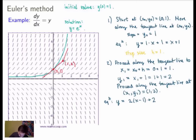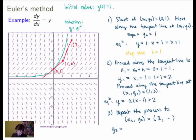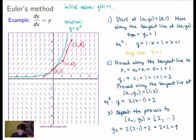We keep repeating the same process. Moving along this new tangent line to x₂ = x₁ + h = 2. To find y₂, we substitute back: y₂ = 2(2 − 1) + 2 = 2 + 2 = 4. So the new point has coordinate (2, 4). And then we just keep moving, and so on and so forth.